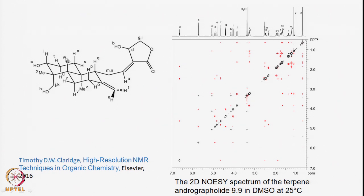This is a very important observation with extreme value in many applications. A large amount of biological NMR is based on this concept. Structural determination of large molecules has become possible because of this strategy. Here is an experimental example of a molecule with many protons labeled A, B, C, D, E, F, G, H, and so on, with the corresponding 2D NOESY spectrum showing the diagonal and cross peaks (in red). By quantifying all cross peak intensities, one can establish the network of inter-proton distances and determine molecular structure.